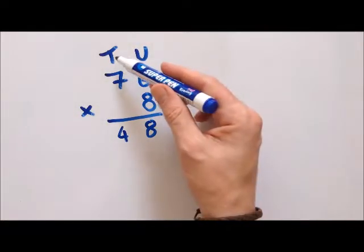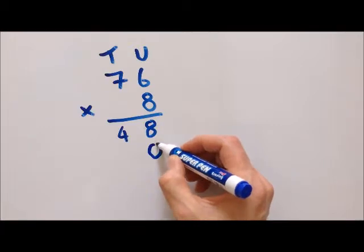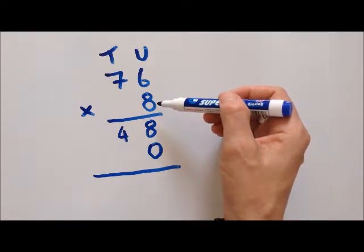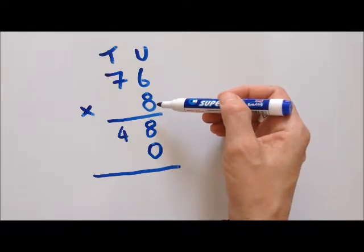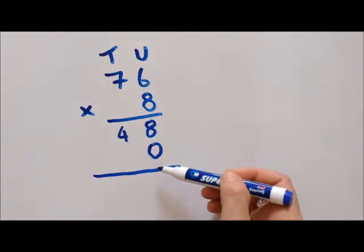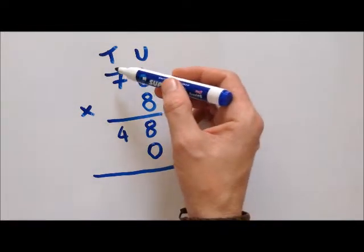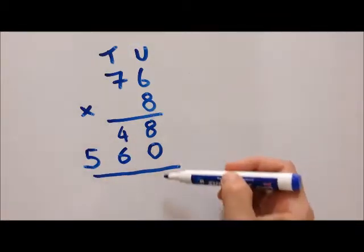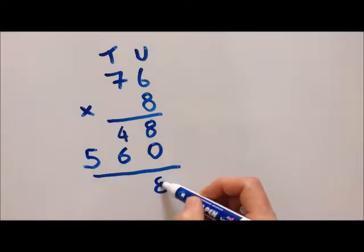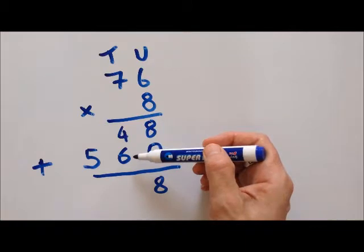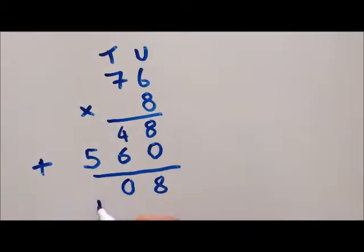Now for the tens column — remember what column we're doing: it's going to be a multiple of ten, so there will be a zero involved. I like to put the zero there. Seven times eight is 56 — this is why it's really important to know your times tables. It's eight times 70, so it becomes 560. Then we add it up: eight plus zero is eight, four and six is ten — there's a number bond of ten — so put a zero here, carry the one across, five plus one is six. There's our answer: 608.